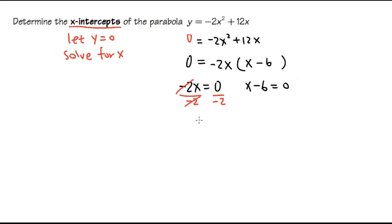And we will have our first answer, x is equal to 0. And for the second one, we just need to add 6 on both sides, so that we can solve for that x as well. x is equal to 6.